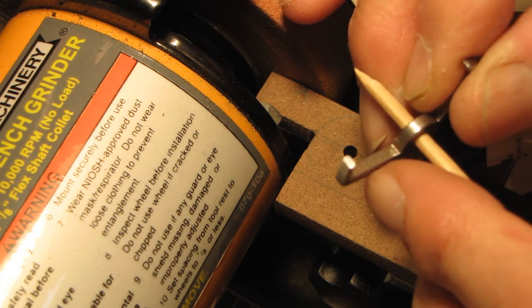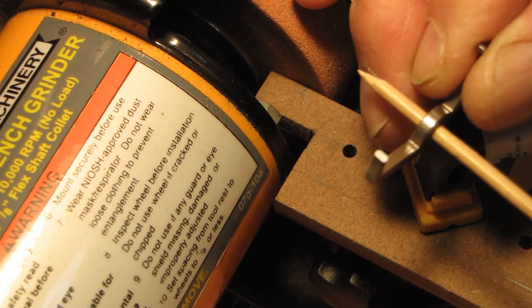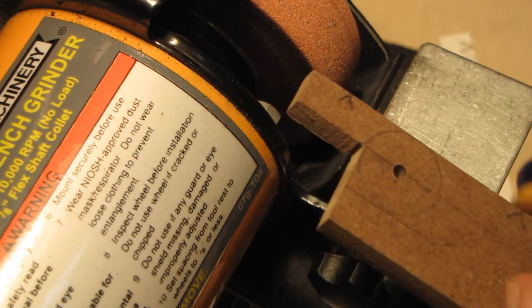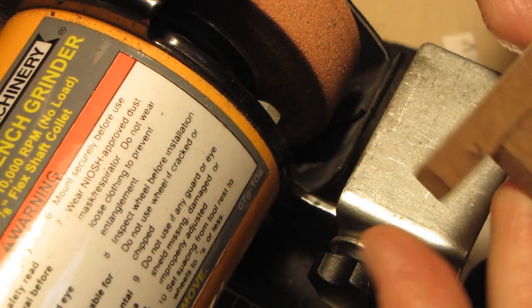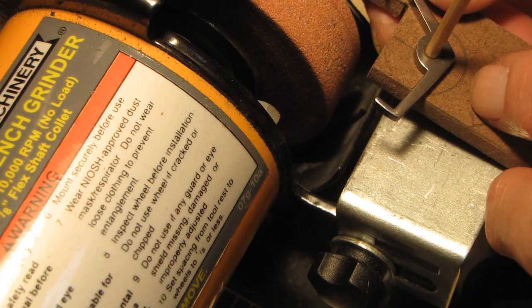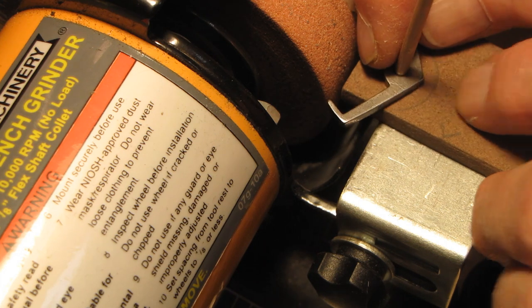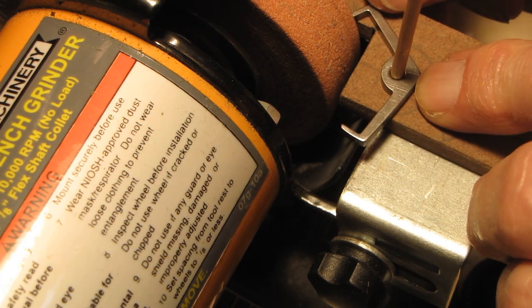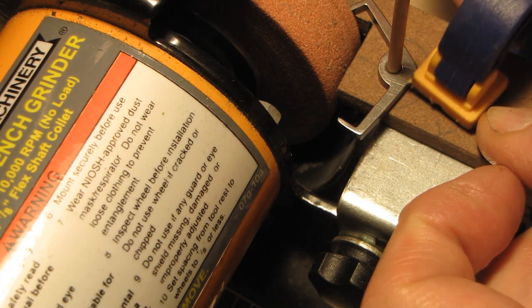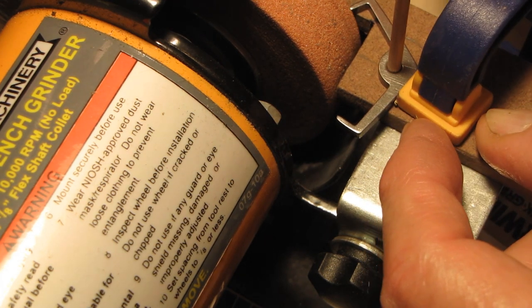There you go, looks good to me. Next I will do the exit pallet. I put the arbor into another hole and adjust the tangent line with the grinding stone as I did it with the other pallet, but on the other side of the stone wheel.